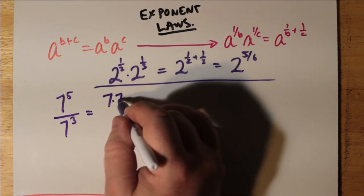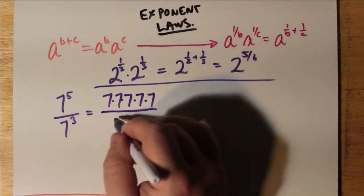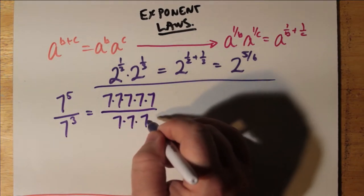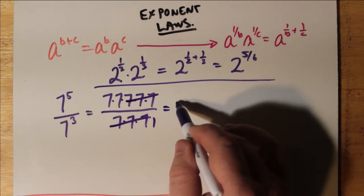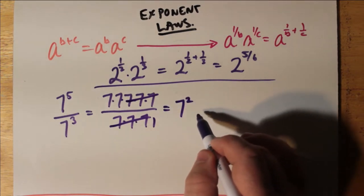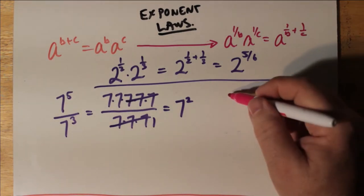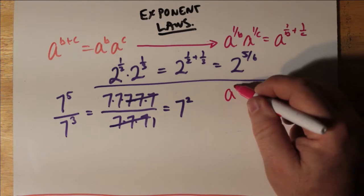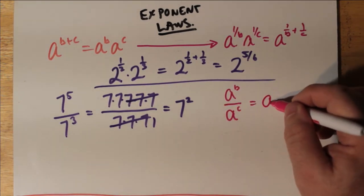What if the bases themselves occur in a fraction? So 7 to the power 5 divided by 7 cubed. That's 7 multiplied itself by 5 times divided by 7 multiplied by itself 3 times. The 7 times 7 times 7 cancels on the top and bottom, and you get 7 times 7 over 1, or 7 squared, or if you like, 49.